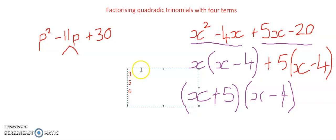Then I know that I need to make sure that I've got one of those in my question. So I need to split negative 11p. To do that I'm going to be looking at my 5 and my 6.